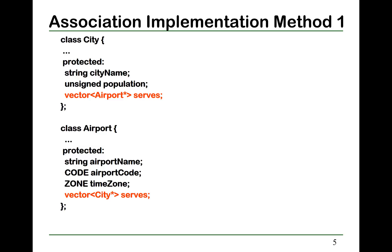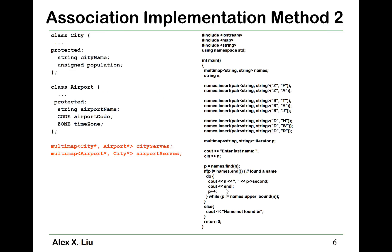There are two ways of implementing an association. The first method is to use pointers. For example, in the city class we have a vector of airport pointers that holds all the airports that city is served by, and in the airport class it has a vector of city pointers storing all cities that airport serves. The second method is to use a multi-map, where we don't store pointer lists in each class; instead, we use a multi-map to store pairs of city and airport. An example code demonstrates this multi-map approach.